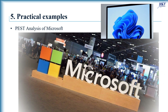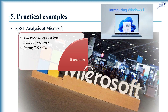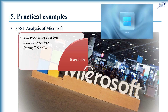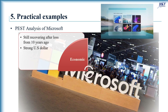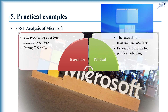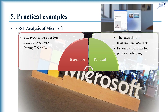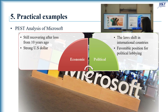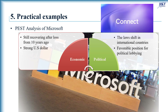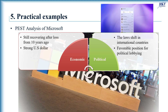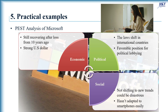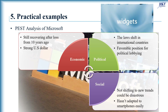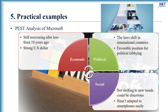The second example is the PEST analysis of Microsoft. Concerning the economic environment, Microsoft is still recovering from changes over 10 years ago, and the stronger U.S. dollar has caused some friction since the recession. The political environment directly affects the profitability and revenues of any active business; right now, Microsoft is in a favorable position for political lobbying, having provided more than $10 million towards the formation of political environments within the last two years. Social factors also play a role — unfortunately, Microsoft hasn't adapted to smartphones easily, with most products built for computers and little focus on mobile users.